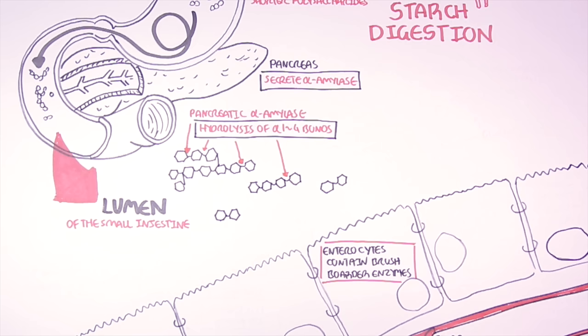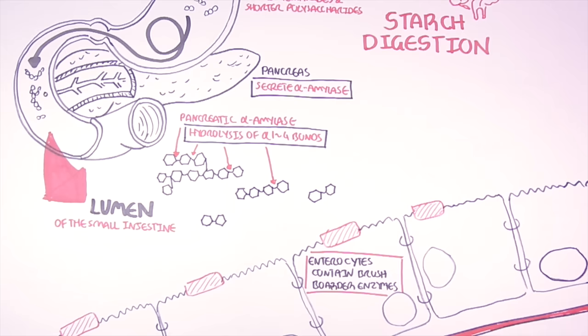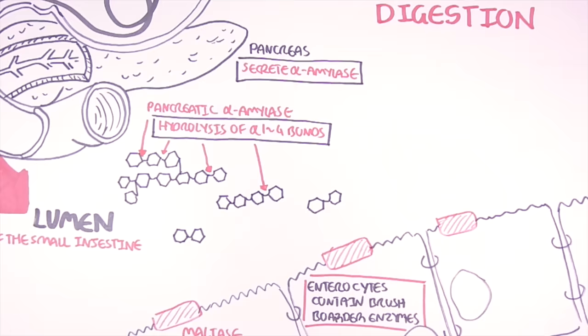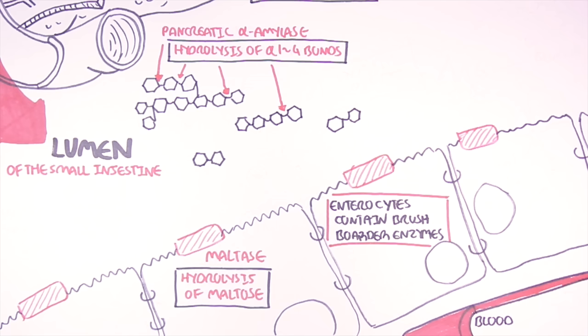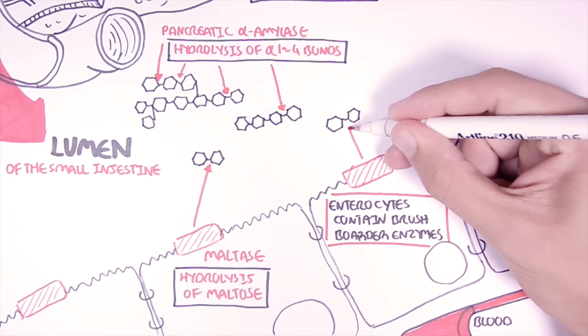The enterocytes as I mentioned also have enzymes called brush border enzymes that participate in the digestion of starch. These enzymes include maltase which will hydrolyze maltose. Now maltose is essentially two glucose molecules linked together. So maltase will hydrolyze these.